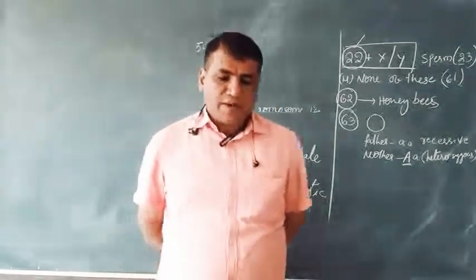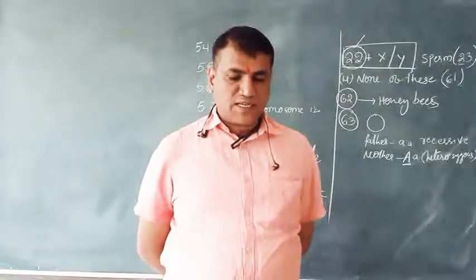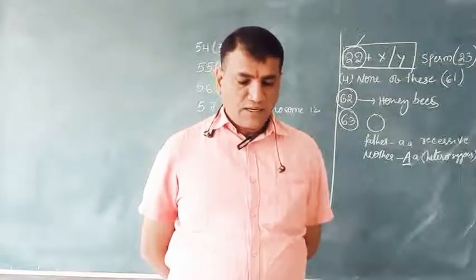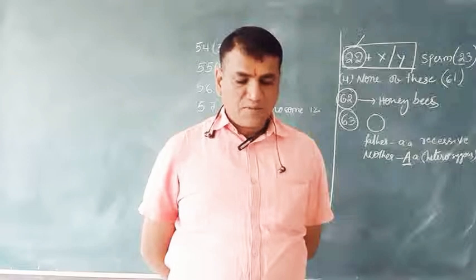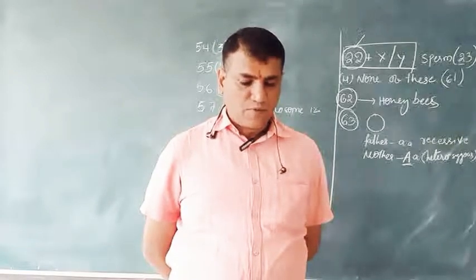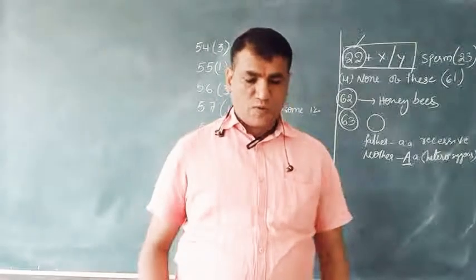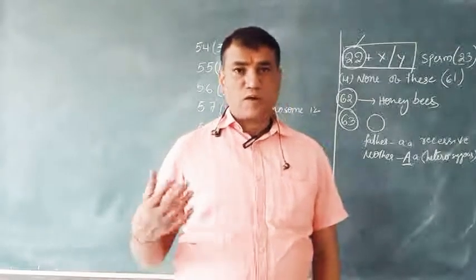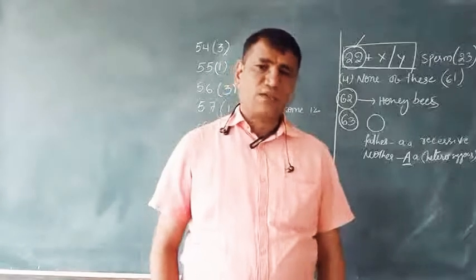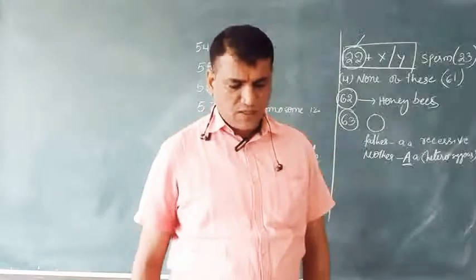Question 64: When an albino rabbit is crossed with a homozygous chinchilla rabbit, and F1 is crossed with similar genotype, the percentage of chinchilla in F2 will be 25%. Answer: 25% — one out of four offspring.